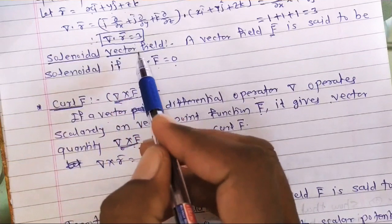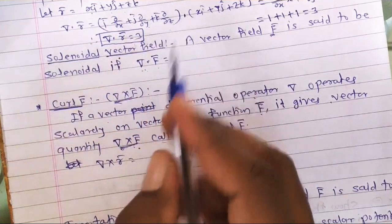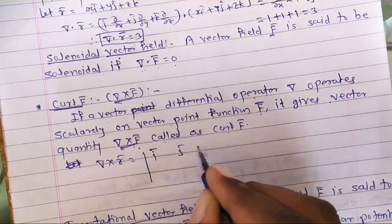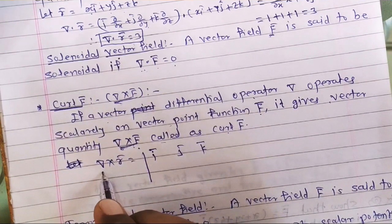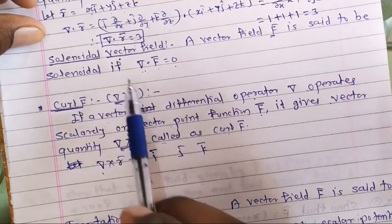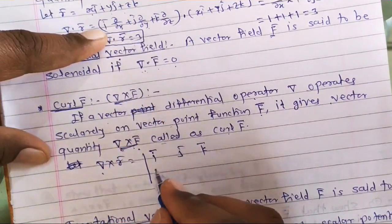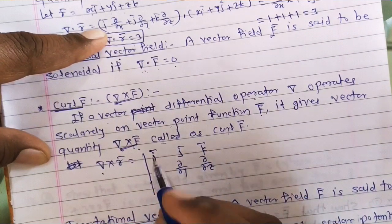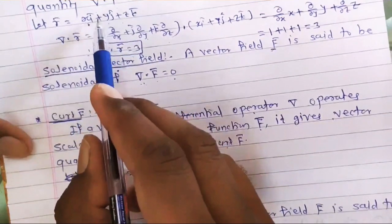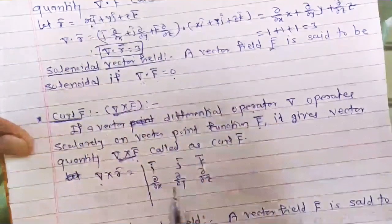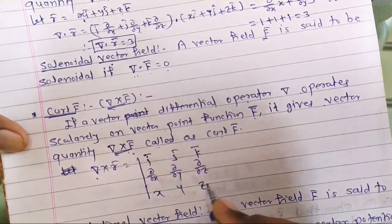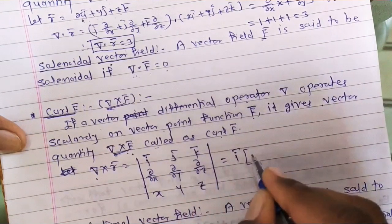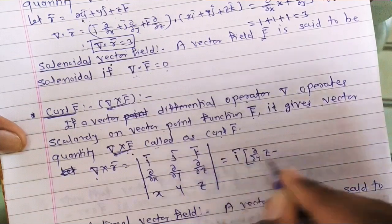Here r̄ = xī + yj̄ + zk̄ and del = ī(∂/∂x) + j̄(∂/∂y) + k̄(∂/∂z). To calculate del cross r̄, we use the cross product determinant: the first row is ī, j̄, k̄; the second row contains the coefficients of del, which are ∂/∂x, ∂/∂y, ∂/∂z; and the third row contains the coefficients of r̄, which are x, y, z. Expanding this determinant gives the curl of r̄.